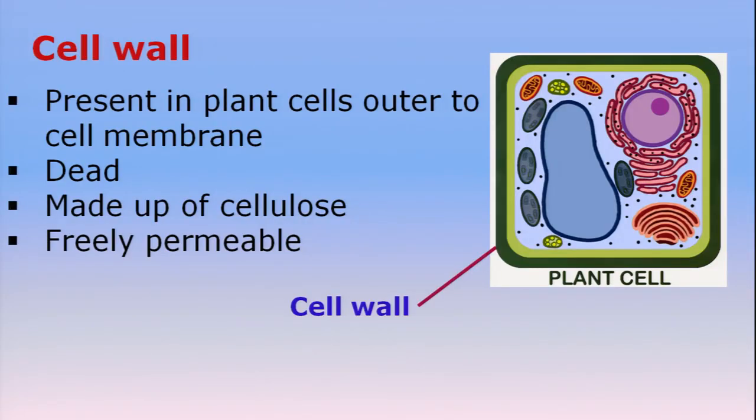This cell wall is dead — it's not living because it's rigid and fixed in structure. It is not flexible, neither is it selectively permeable like plasma membrane. Cell wall is made up of cellulose, which is a complex carbohydrate, and this cell wall is freely permeable. Freely permeable means it allows most substances to move across it, unlike plasma membrane which is selectively permeable.